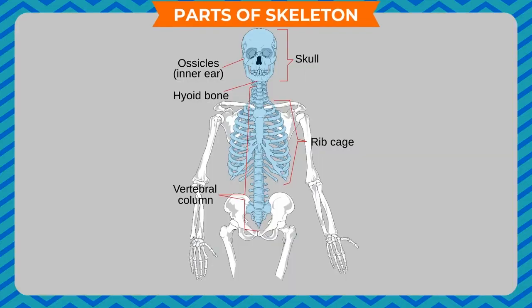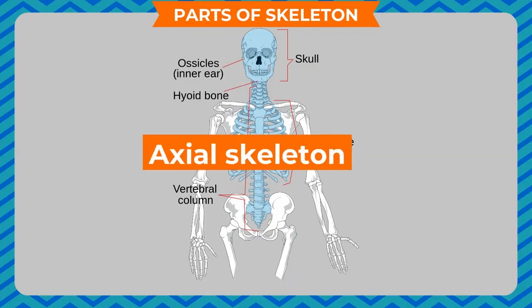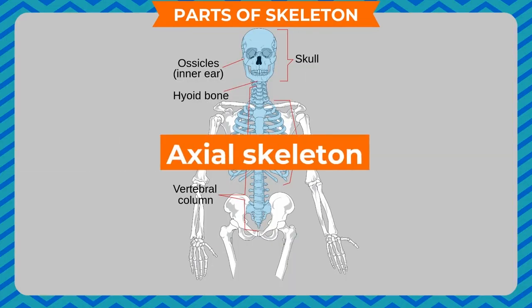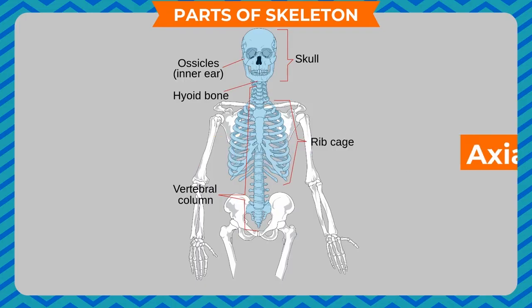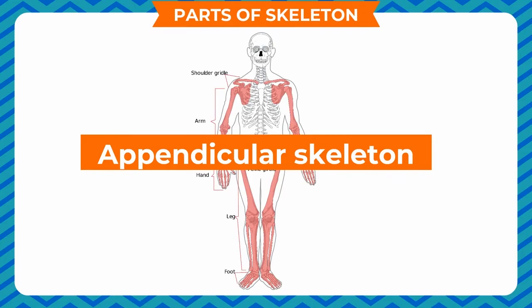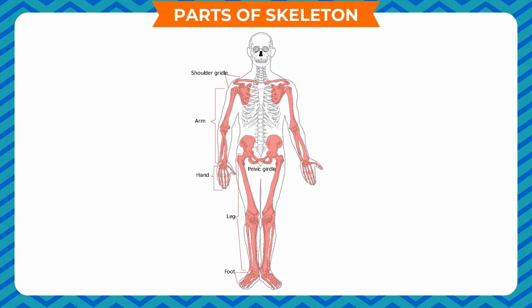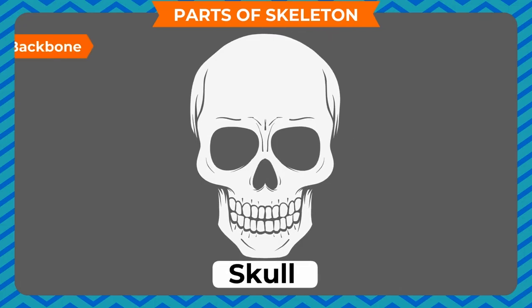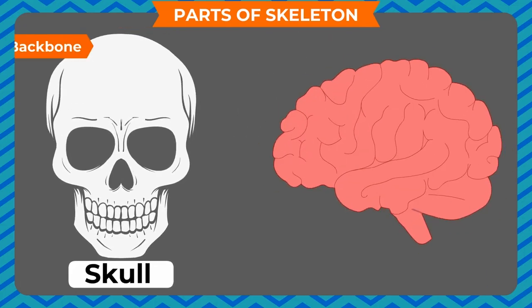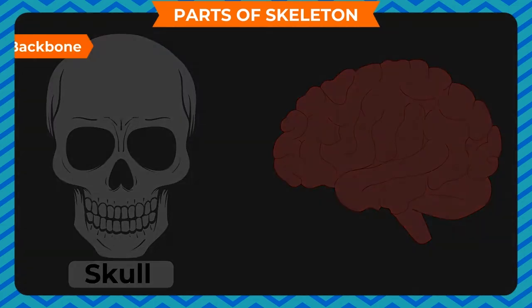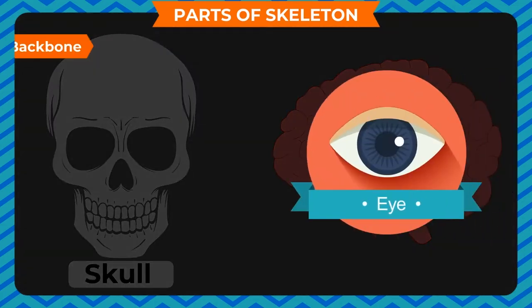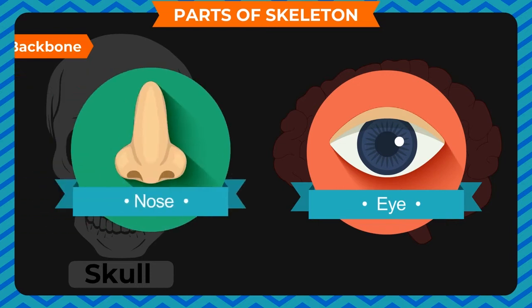Parts of the skeleton — Axial skeleton: It includes the skull, vertebral column, ribs, and sternum. Appendicular skeleton: It includes the bones of limbs and girdles. The skull protects the brain and contains depressions for the eyes and nose.